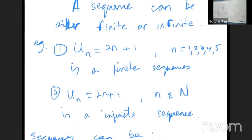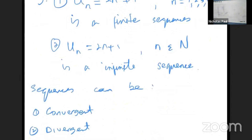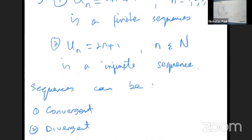Alright. These infinite sequences could either do two things: they can converge or diverge. I also left out one — they can be periodic as well. So it could be convergent, divergent, or periodic. We want to focus on this a little bit — specifically, how to know if a sequence converges.